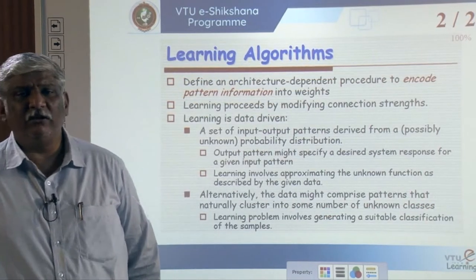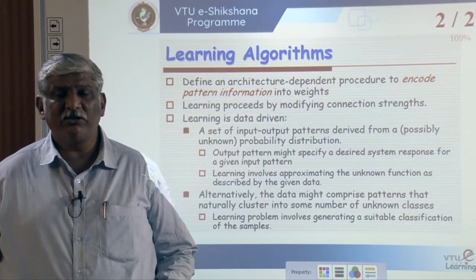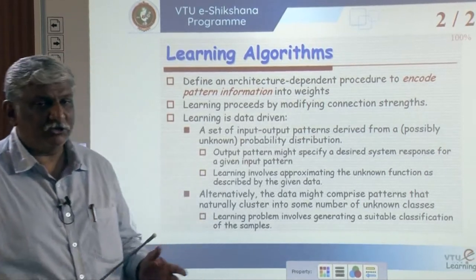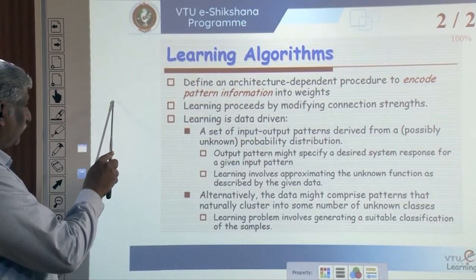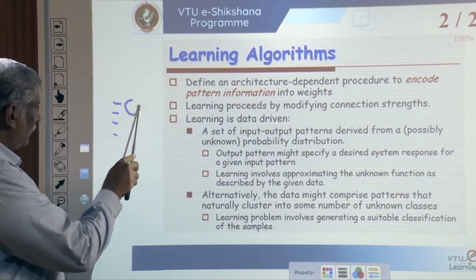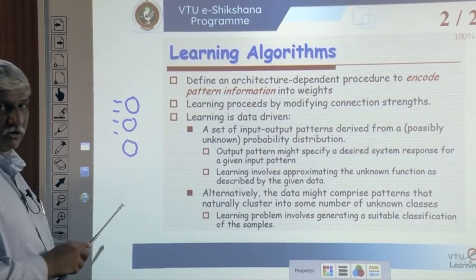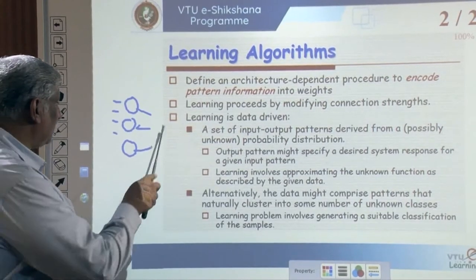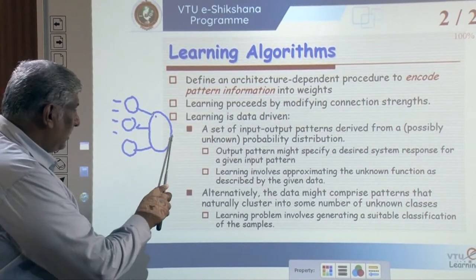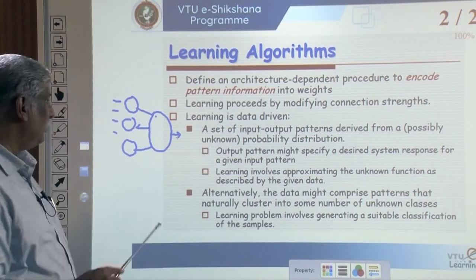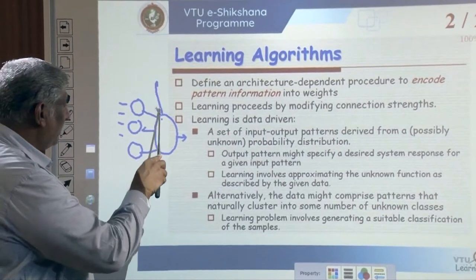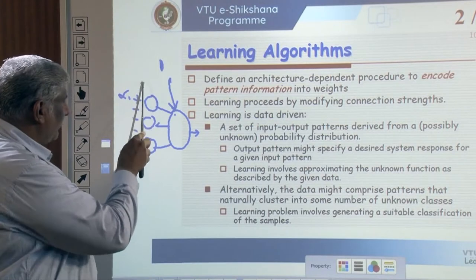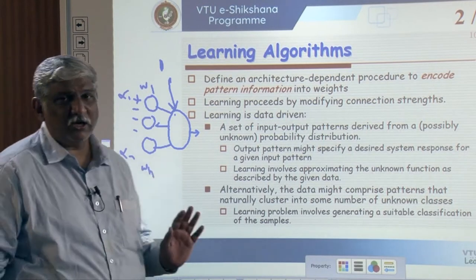Now we will see a few learning algorithms. We define an architecture-dependent procedure to encode pattern information into the weights. The network architecture has inputs, mathematical functions in layers, nodes whose outputs are connected to another set of nodes - either a single-layer perceptron or multi-layer perceptron - followed by an output. We can have bias, inputs X1 to Xn, and weights W1 to Wn. We have already discussed the architecture of a neural network.